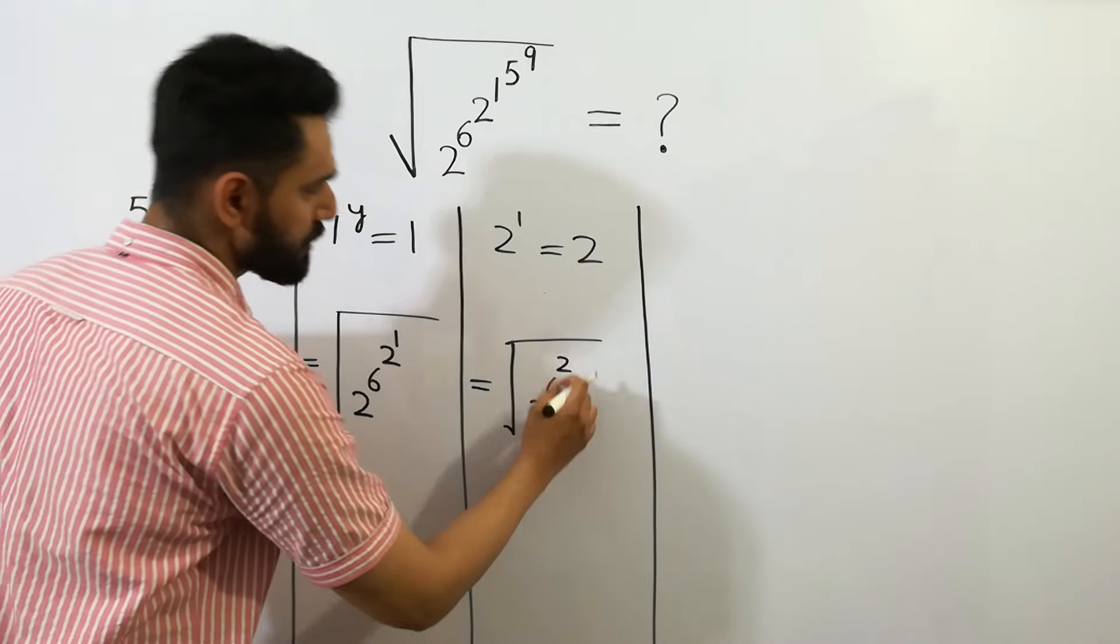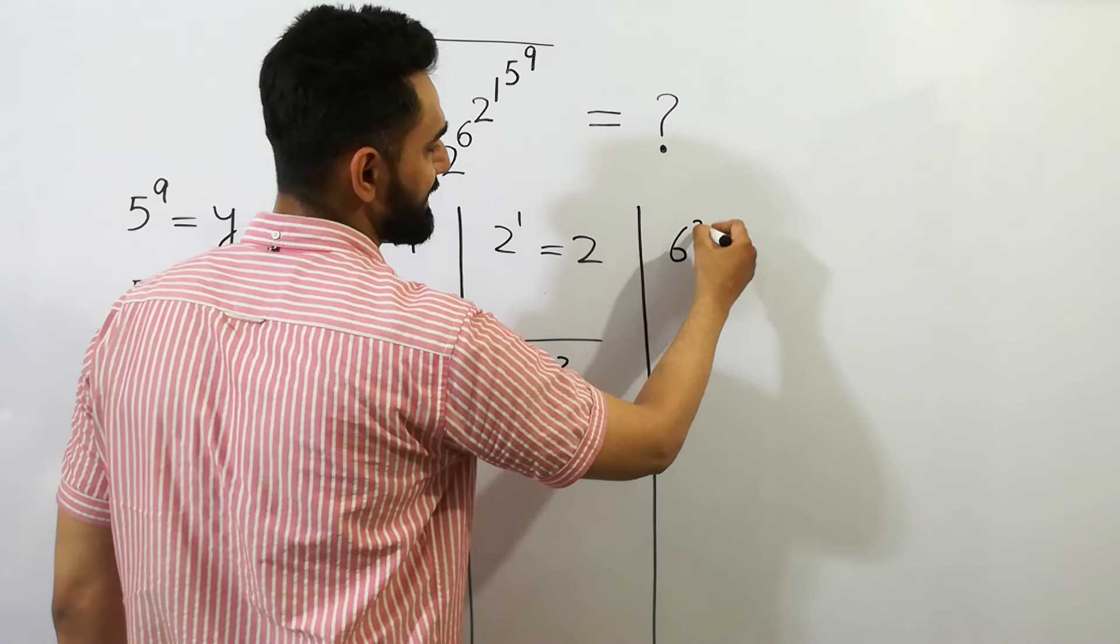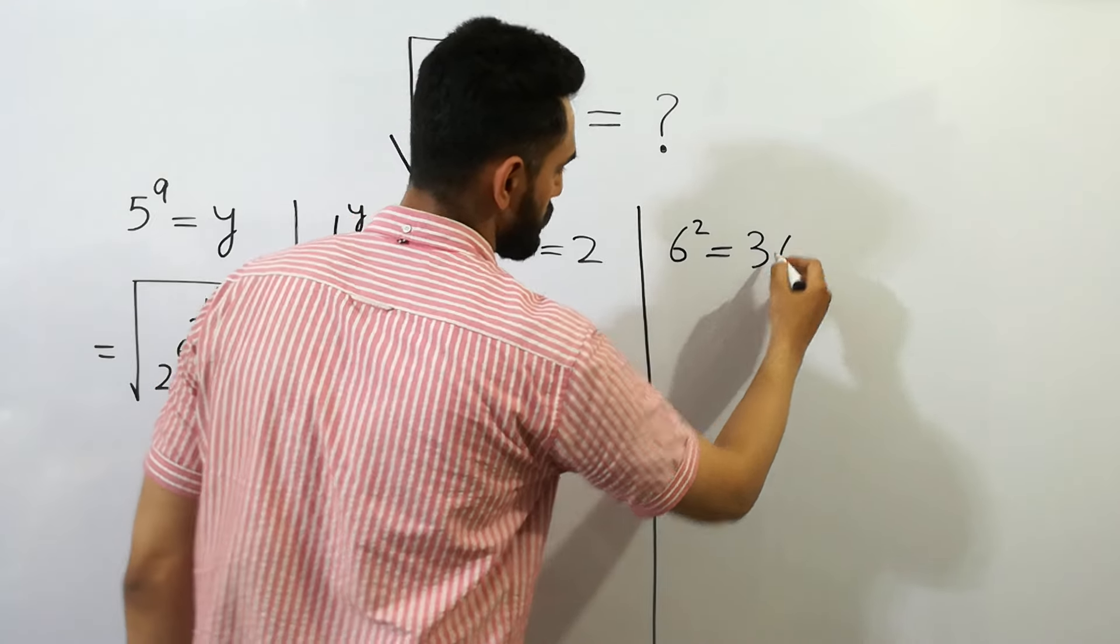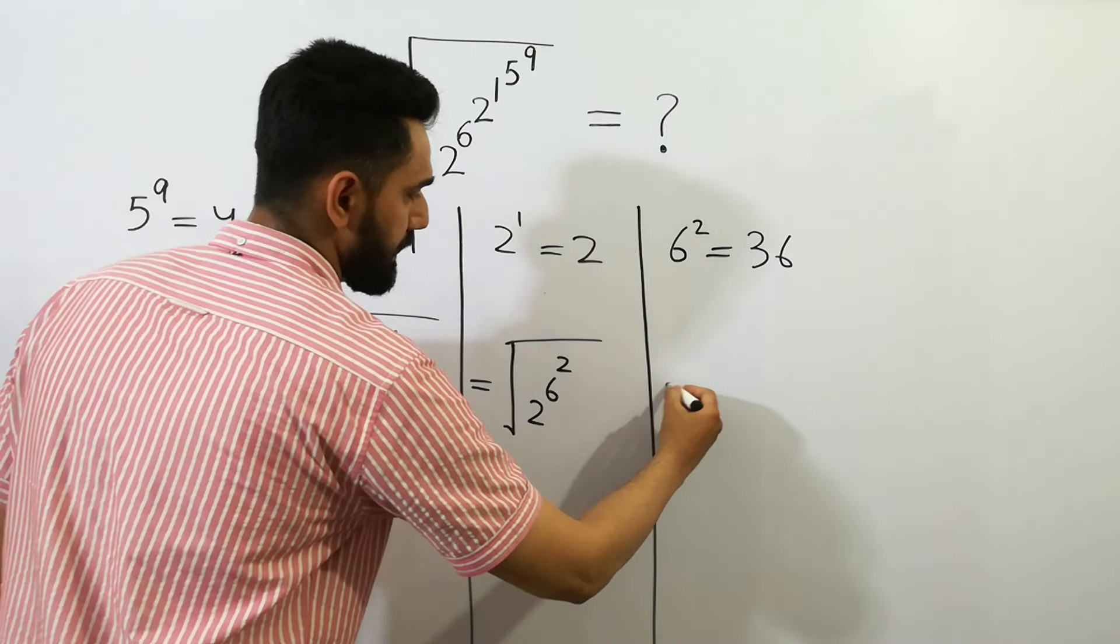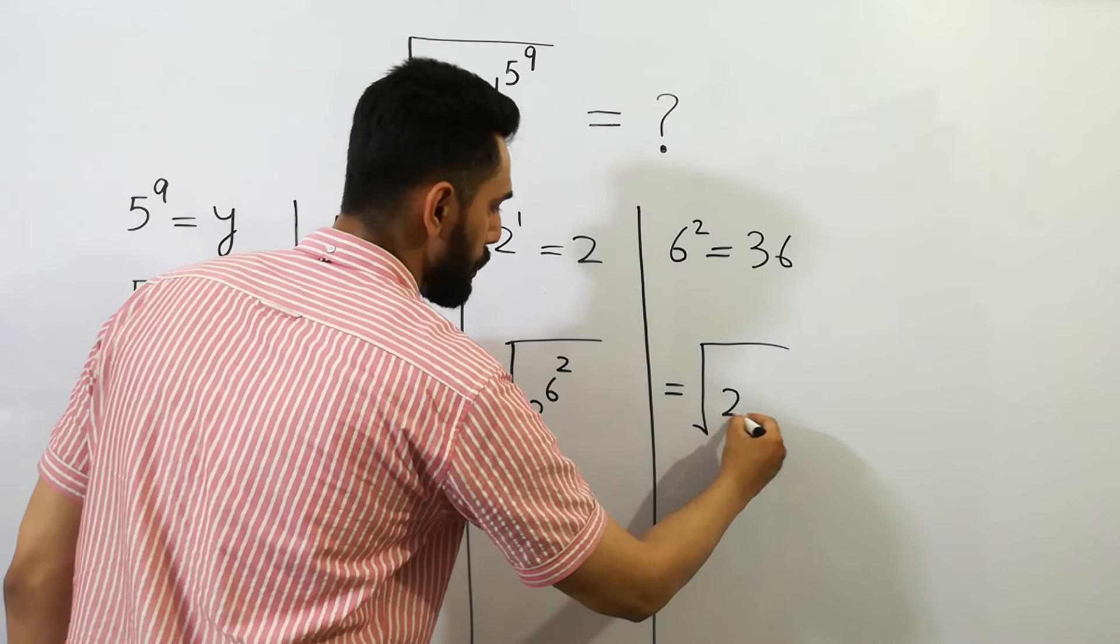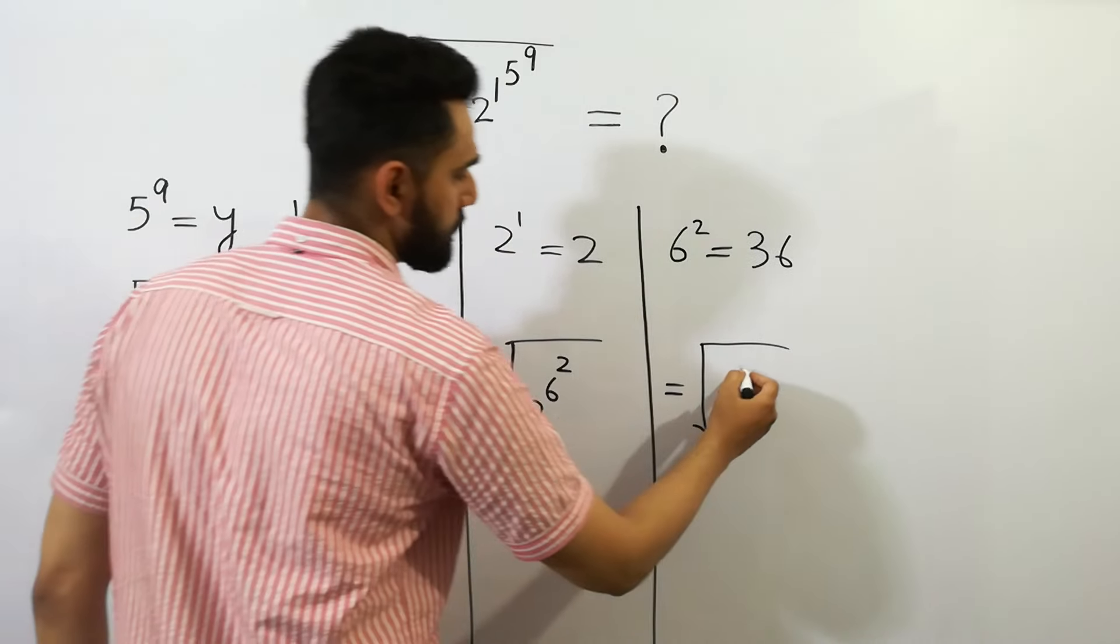Next, 6 to the power 2 equals 36. So here we get 2 to the power 36.